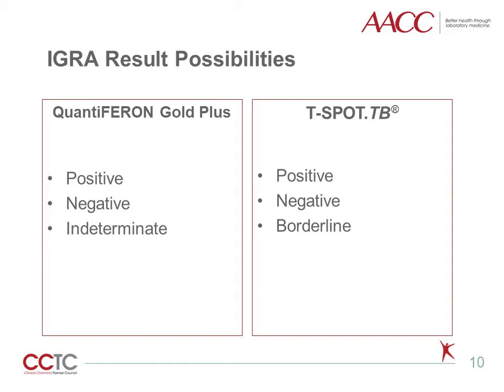Among patients with a negative IGRA, TB is less likely than in those with a positive IGRA. However, false negative results can occur for a variety of reasons, including poor immune function and technical operational variability. Therefore, treatment for latent TB despite a negative IGRA may be considered on an individual basis. Finally, patients whose result falls into the uncertain category should have their IGRA repeated. If the repeat IGRA result is also uncertain, patients should be screened for TB by another method, for example the TST.